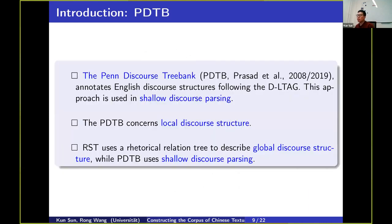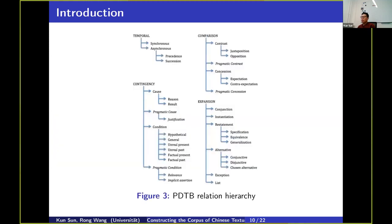Now we look at PDTB. PDTB is a broad discourse treebank — a shallow discourse parsing resource because it contains local discourse structure. RST uses a rhetorical relation tree to describe global coherence, whereas PDTB uses shallow discourse to fix discourse relations in the neighborhood. In figure three, you can find PDTB adopts a three-class annotation hierarchy. In comparison with RST texts, PDTB texts are consistent and hierarchical.